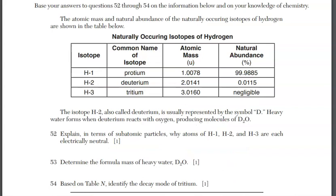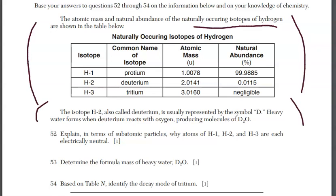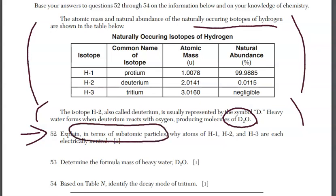The next three questions, 52 through 54, have to do with information in the table about naturally occurring isotopes of hydrogen. We're also given that isotope H-2 is called deuterium, usually represented by the symbol D, and heavy water is when deuterium reacts with oxygen to get D₂O. For question 52, explain in terms of subatomic particles why atoms of H-1, H-2, and H-3 are each electrically neutral. When you have to explain anything 'in terms of,' make sure you answer the question with that in mind.